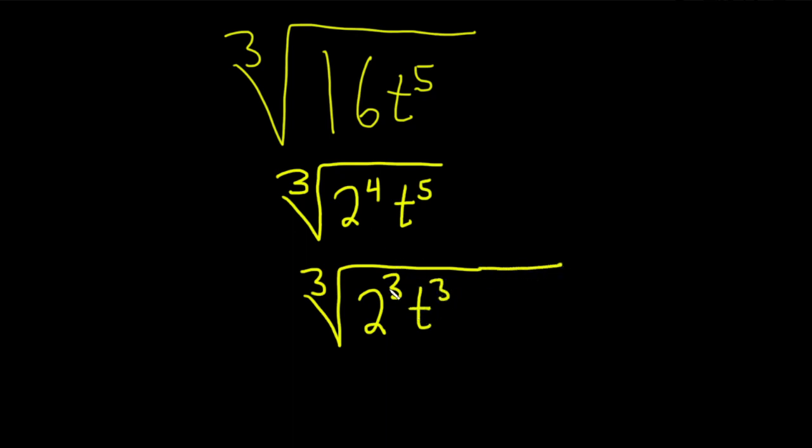And then we borrowed a 2 cubed, so we're left with 2 to the first. And that's because when you multiply the 2 and the 2 cubed, you add the exponents.